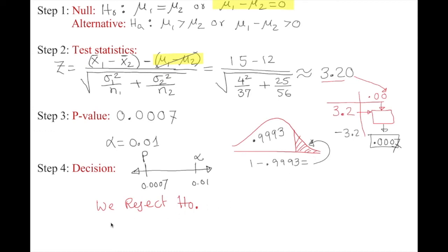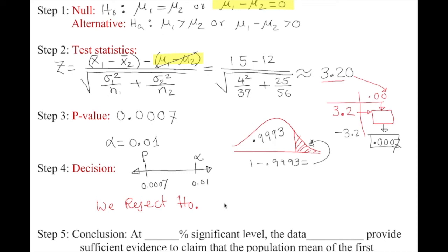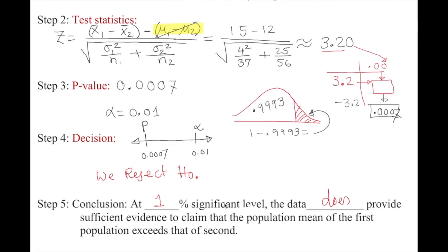The conclusion is written as: at the 1% significance level, the data does provide sufficient evidence to reject the null hypothesis and support the claim that the population mean of the first population exceeds the population mean of the second.